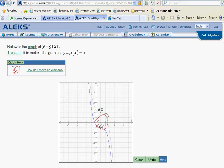In fact, we'll move it down five squares. So we'll simply pick this point up and we'll drag it down five squares. In fact, not only that point, but every point on the graph.